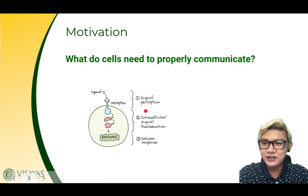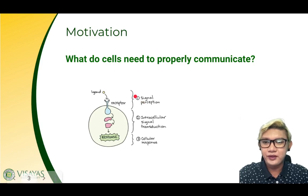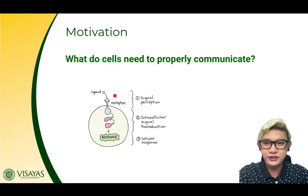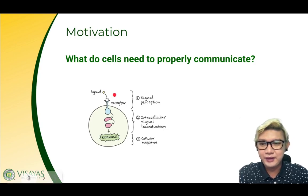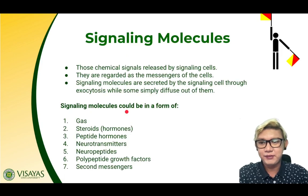Let me ask you this question: what do cells need in order to properly communicate? In our previous lesson, we talked about the ligands, the receptors, and the second messengers as the key components of cell communication. For our discussion today, we'll focus more on the different types of ligands and the different types of cell surface receptors.